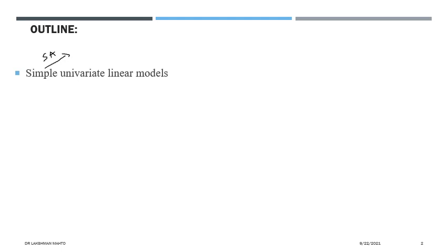'Simple' means there is a single attribute — that means limited opportunity to define the response. 'Univariate' means there is a single response. So simple univariate linear model involves a single attribute and a single response.